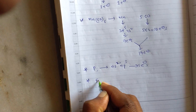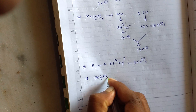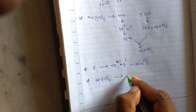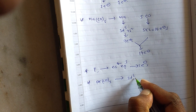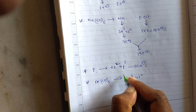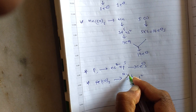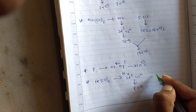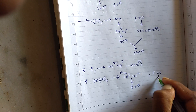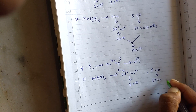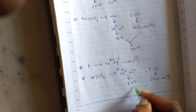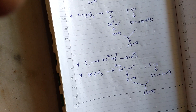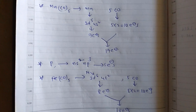Next, Fe(CO)₄: iron has 3d⁶4s² electron configuration, that means it has 8 electrons. And it has 4 CO ligands — each CO gives 2 electrons, so 4×2 = 8... wait, 5 CO gives 5×2 = 10 electrons. Total: 18 electrons for Fe(CO)₄.